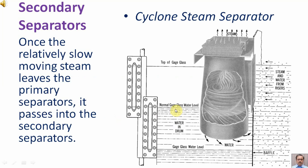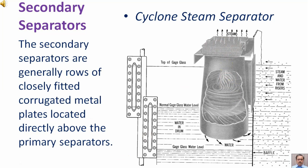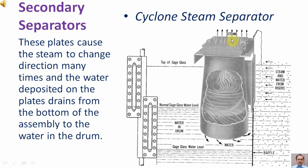Once the relatively slow-moving steam leaves the primary separators, it passes into the secondary separators. The secondary separators are generally rows of closely fitted corrugated metal plates located directly above the primary separators. These plates cause the steam to change direction many times, and the water deposited on the plates drains from the bottom of the assembly to the water in the drum.